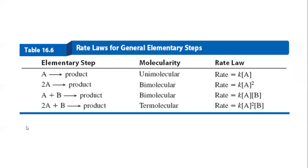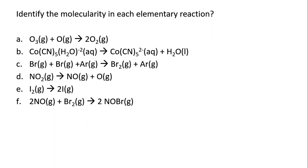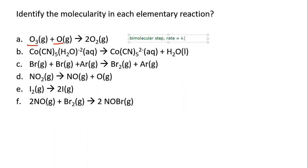Now let's look at some examples where we identify the molecularity of each elementary reaction by counting the reactant molecules. In example A, we have O3 and O — two different molecules — so this is a bimolecular step. The rate law will be rate = k[O3][O]. In example B, we have one reactant, so this is a unimolecular step, and the rate law will be rate = k[reactant].